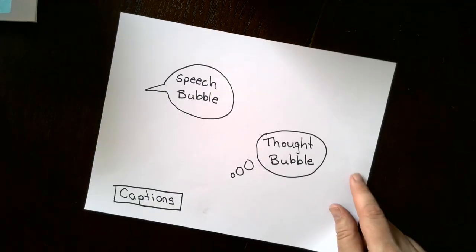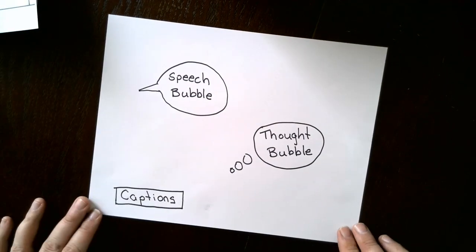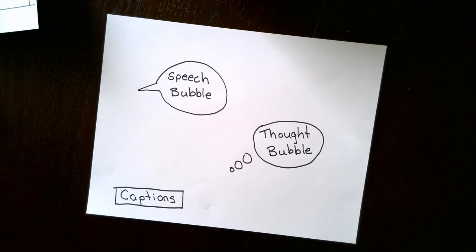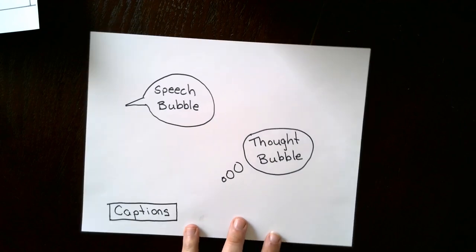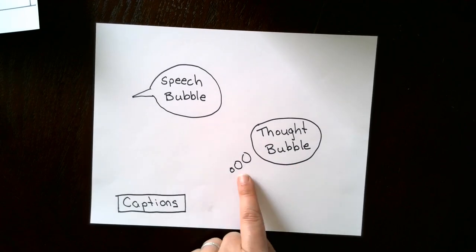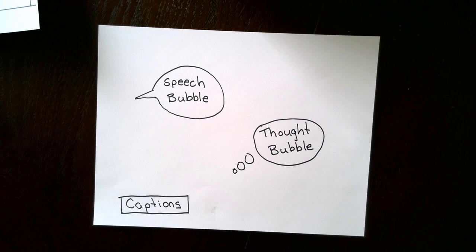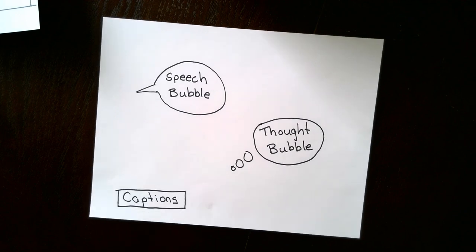The next super important things are speech bubbles, thought bubbles, and captions. A speech bubble is when a character is speaking — talking to themselves or talking to someone else in your story. A thought bubble is a little bit different; it bubbles up to a big one, and that's when a character is thinking. Captions are usually part of the story that just gives information — the character doesn't need to be speaking. It just tells us what's going on to help move the story along.